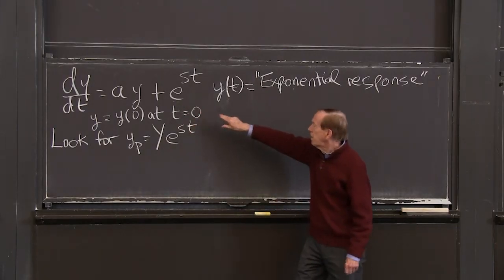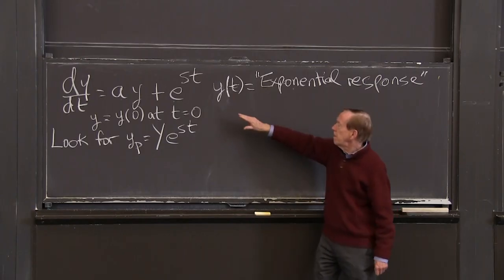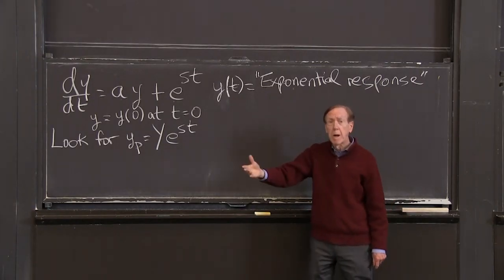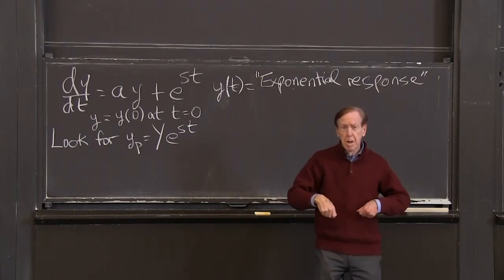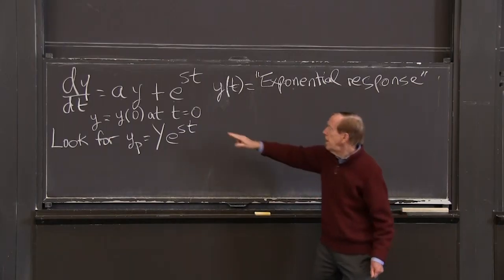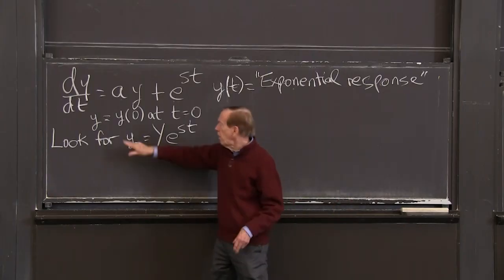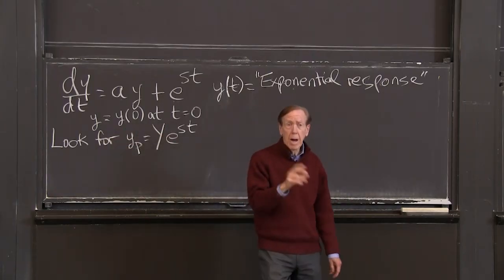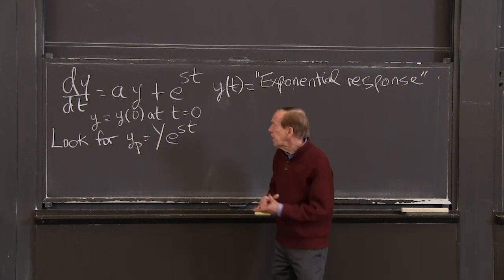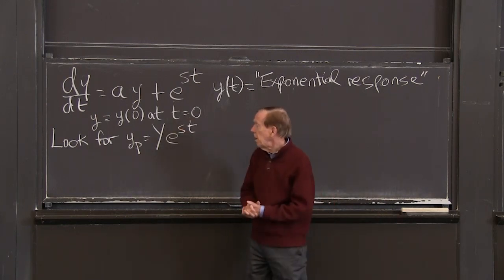And the output, the solution, is called the exponential response. That word response says what comes out when e^(st) goes in. And as before, we have some starting deposit y(0), initial condition at time 0.